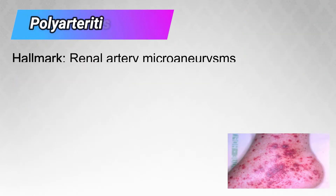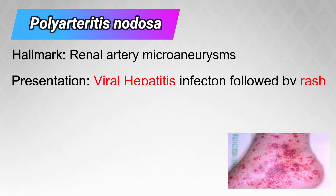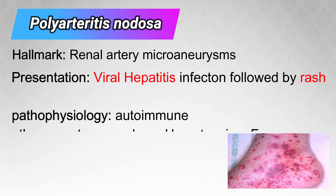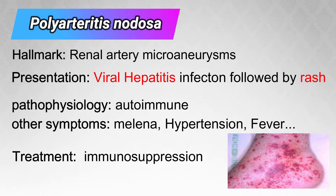The hallmark of Polyarteritis Nodosa is renal artery microaneurysm. The presentation is very important — the patient would usually have viral hepatitis followed by rash. The pathophysiology is autoimmune in nature, and we treat it with immunosuppression.